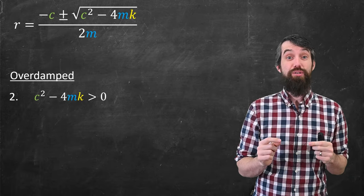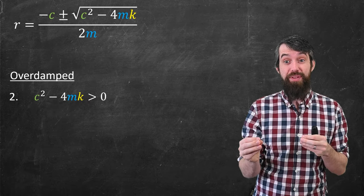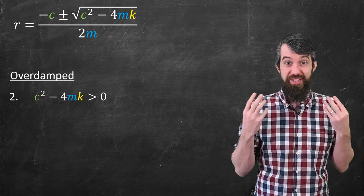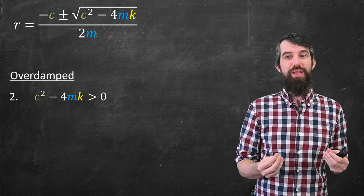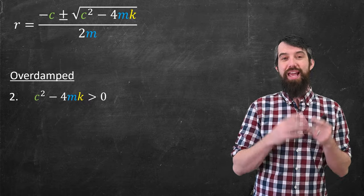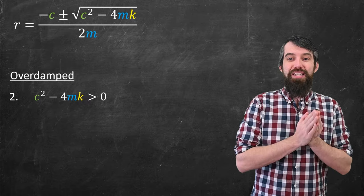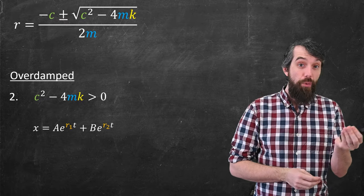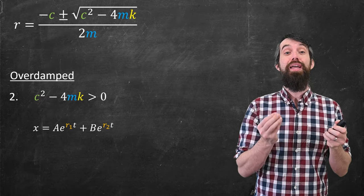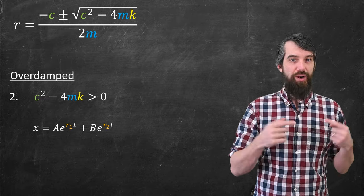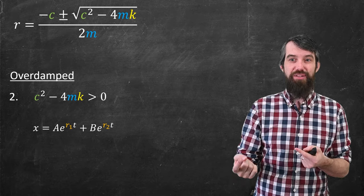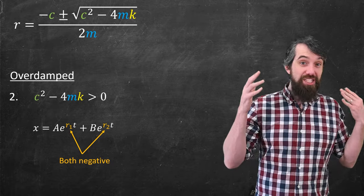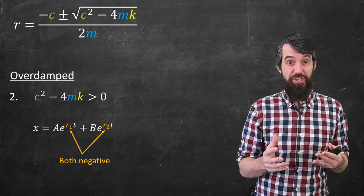The second case we're going to consider is what I call the overdamped case. So this is when c squared minus 4mk is greater than zero, when you have a lot of friction, so the c is a big number. Well, in that case, we get these two different real roots. And so what you're going to get is something to the form a times e to the r1t plus b times e to the r2t, where r1 and r2, those are both going to be negative values. Your m, c, and k here are all positive. So this is going to be a net negative. So basically, as time goes on, x is going to go to zero. There's going to be an exponential decay.